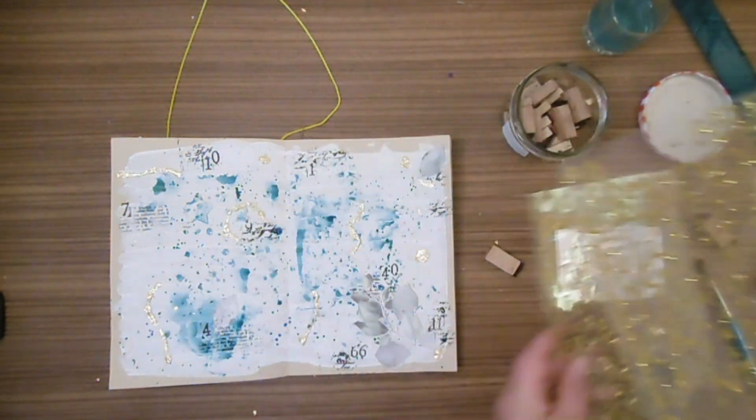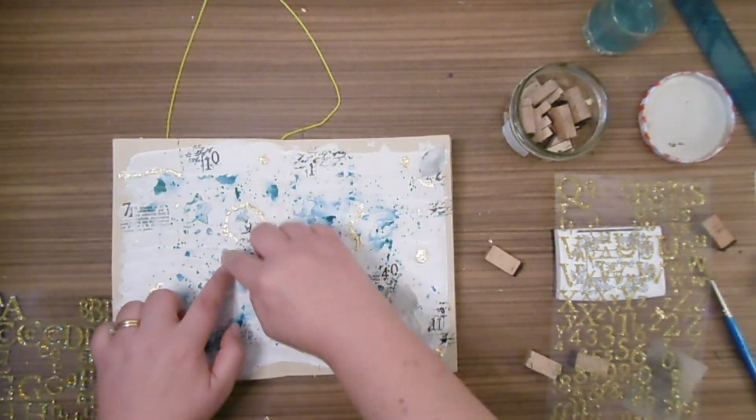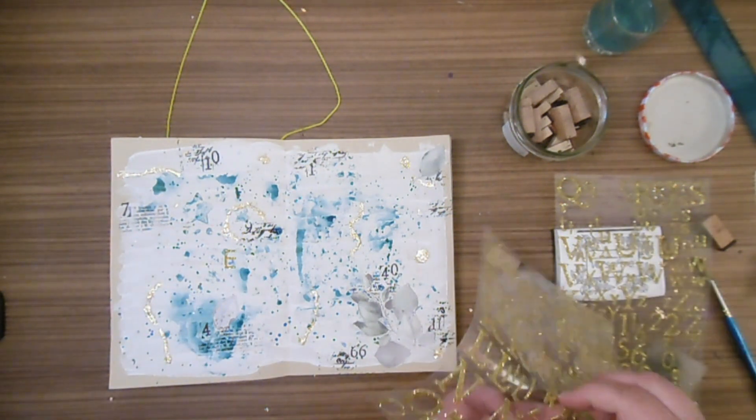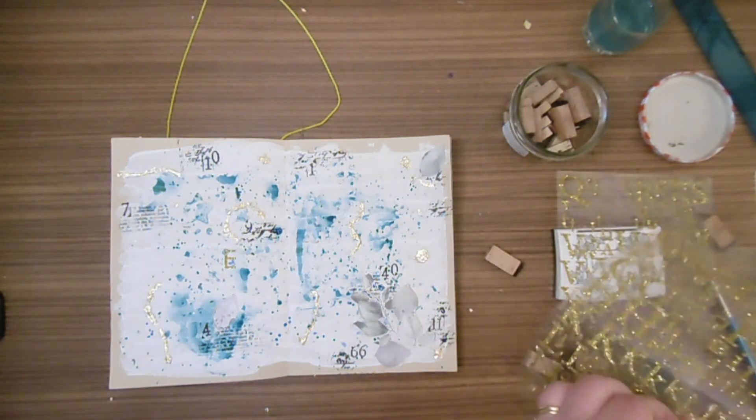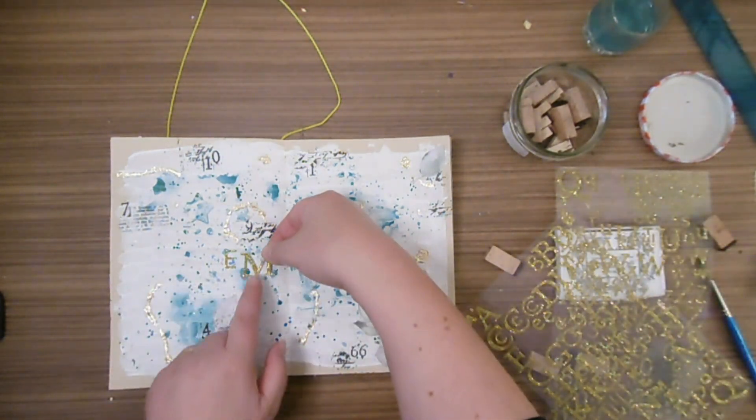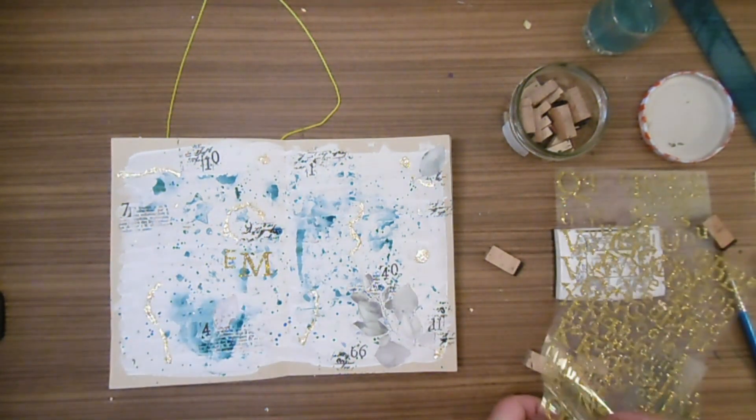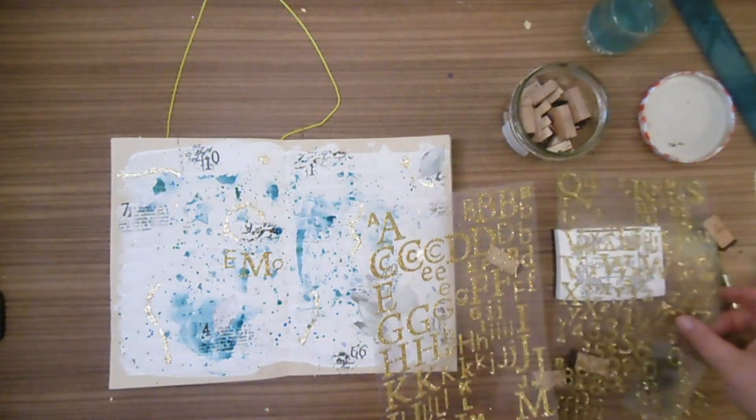Ensuite, avec les lettres, je vais marquer "Émotions". J'utilise les lettres que j'ai. Je l'ai mis en doré. Comme il y a plusieurs formats de lettres, je me suis amusée avec les différents formats. C'est pour ça qu'on a un petit O, un grand M, un moyen E.